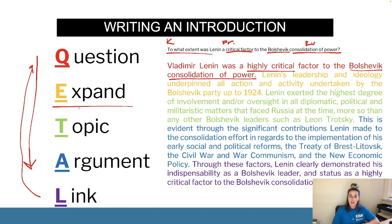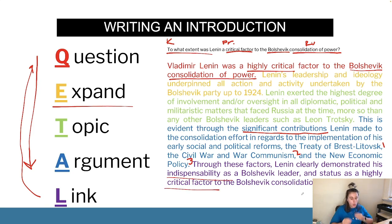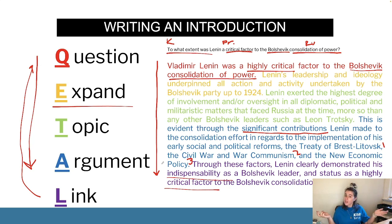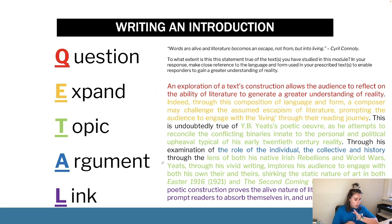Then topic: 'Lenin exerted the highest degree of involvement and oversight in all diplomatic, political, and militaristic matters. This is evident through the significant contributions Lenin made to consolidation efforts regarding his early social and political reforms, the Treaty of Brest-Litovsk, the Civil War and War Communism, and the New Economic Policy.' Those are my three body paragraphs. Then the link: 'Through these factors Lenin clearly demonstrated his indispensability as a highly critical factor' - going back and answering the question. Your responses should flow analytically - not storytelling, but nicely flowing.